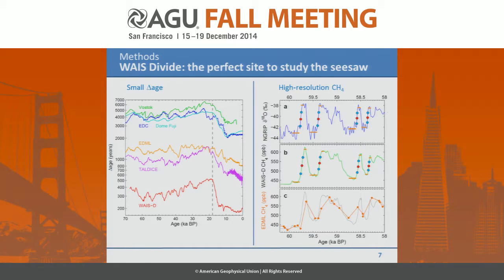The reason we use WAIS Divide is twofold. First, ice cores have a difference between the age of the gases and the ice — the ice-age/gas-age difference, or delta age — which is really small at WAIS Divide. On a logarithmic scale, Dome C has a delta age of about 3,000 years, while at WAIS Divide it's only about 400 years. If the uncertainty in delta age is about 20%, the phasing we derive at WAIS Divide is about an order of magnitude more accurate than at East Antarctic sites.